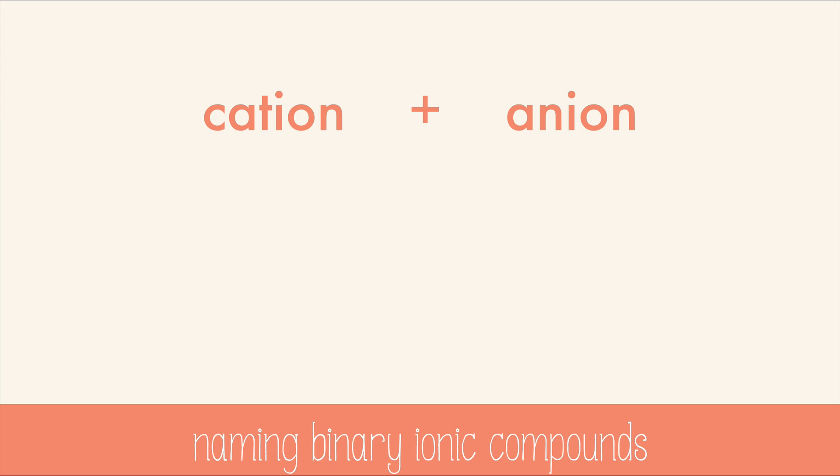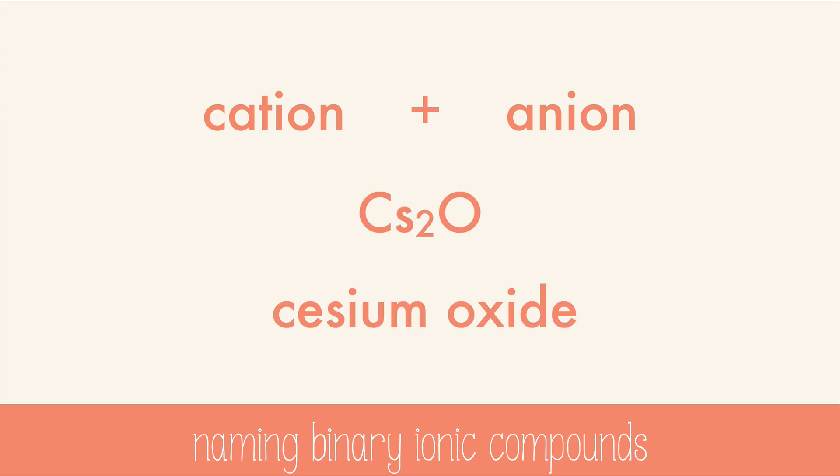For example, Cs₂O is cesium oxide. Cesium is the cation, and oxygen is the anion.